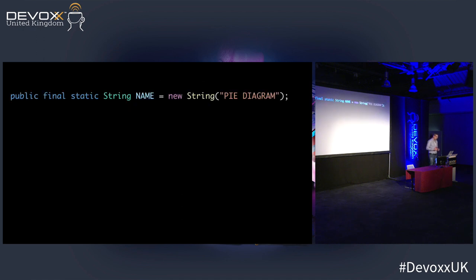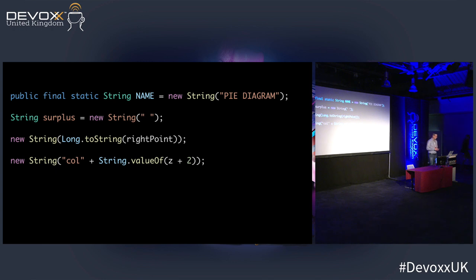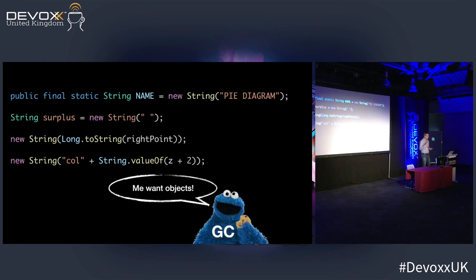Another common error is to create extra string objects. There's no reason to do this because strings are immutable. Here are some examples of how this could look — or this, or this, or that. That last one is my favorite because there are two string objects in a single line. Multiply this by a thousand in your application and the only person you're making happy is the garbage collector.